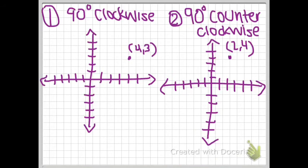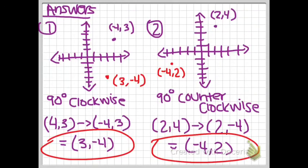Try these examples. Pause the video and see if you could get the right answer. Here are the answers. For number 1, first you change the x coordinate to negative 4, giving (negative 4, 3), then flip the coordinates and the final point would be (3, negative 4). For number 2, first change the y coordinate to negative 4, so you flip (2, negative 4) and it becomes (negative 4, 2), then graph this.